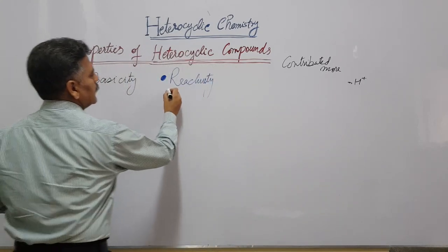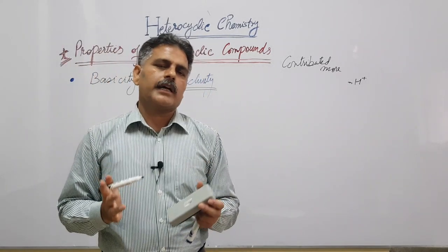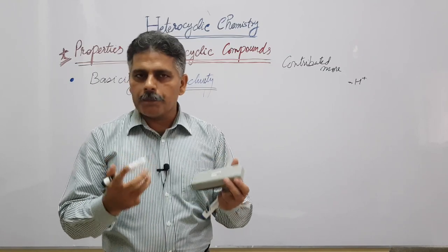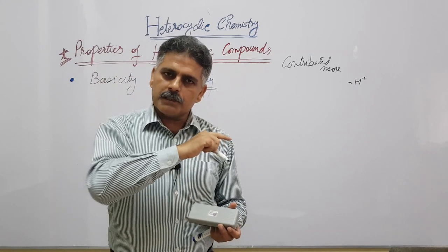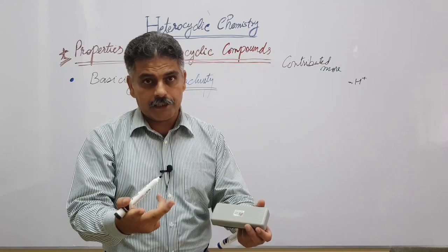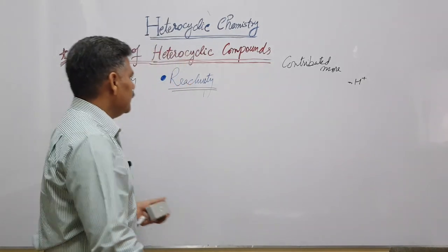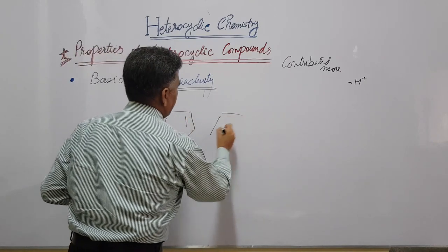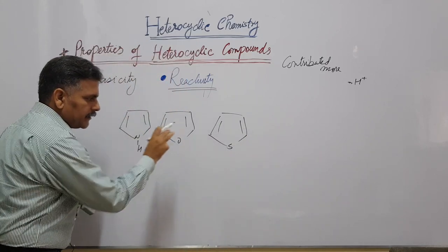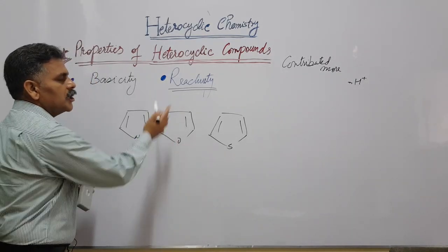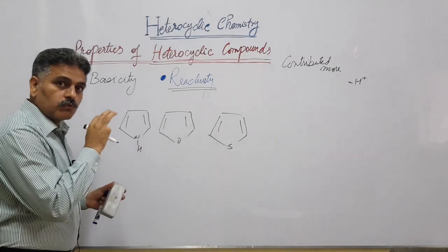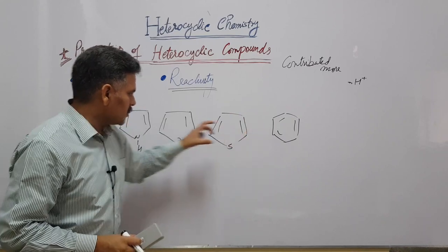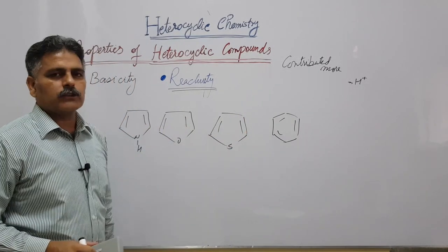Next is reactivity of heterocyclic compounds. Three- and four-membered heterocyclic compounds are more reactive towards nucleophilic ring-opening reactions — smaller rings are more easily cleaved. Five-membered rings such as pyrrole, furan, and thiophene are electron-excessive systems because the lone pairs of the heteroatoms are involved in resonance. So they are more reactive towards electrophilic substitution reactions as compared to benzene.